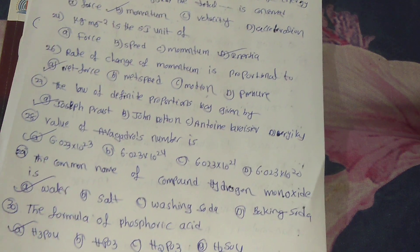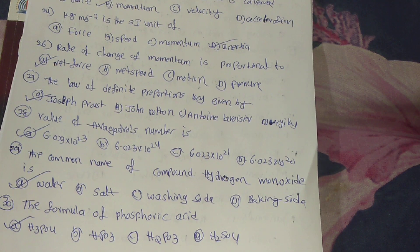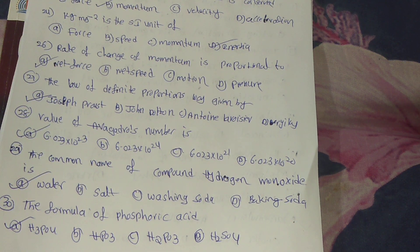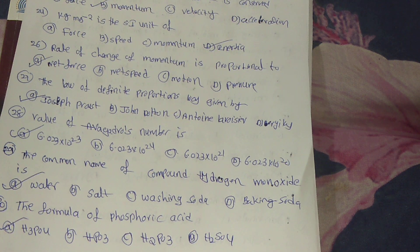Next, the formula of phosphoric acid. Answer is H3PO4, which means option A is the answer.